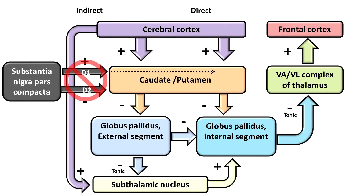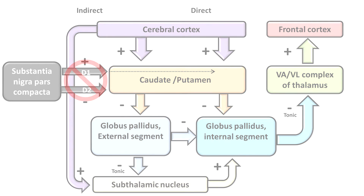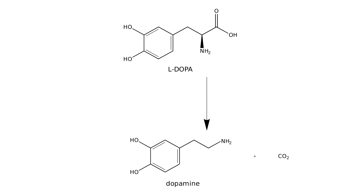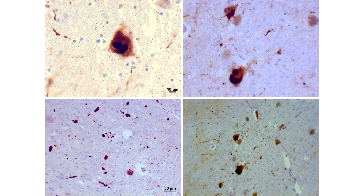In Parkinson's disease, the D1 and D2 connection between the substantia nigra pars compacta and the caudate and putamen is degenerated, causing high inhibitory outflow affecting the upper motor neurons. This can partially be medicated by L-dopa. Masses of the protein alpha-synuclein, known as Lewy bodies, can also be seen throughout the nervous system in Parkinson's disease.